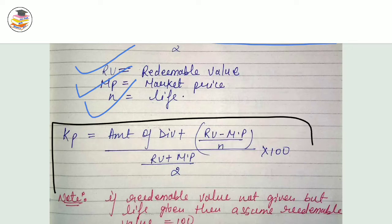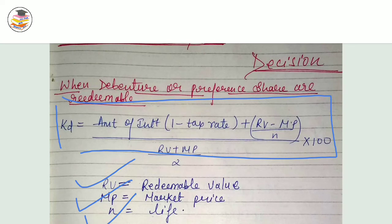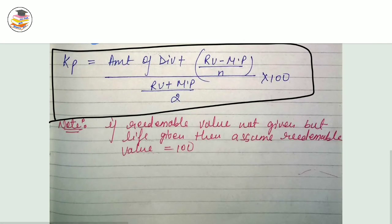Now if you ask me why there is no (1 minus tax rate) in the preference share formula — that is because dividends are not tax-deductible, unlike interest on debentures.